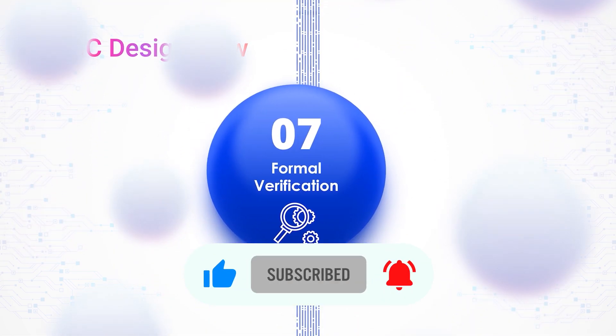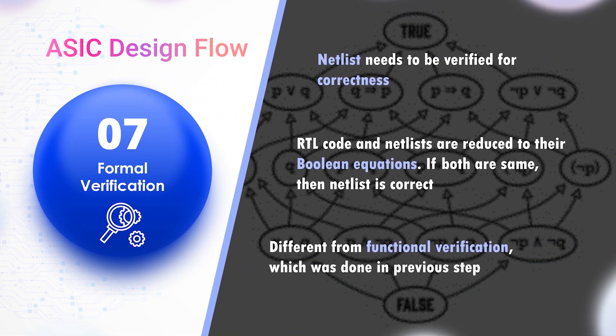Formal Verification: In the previous step, a few more additions were made to the netlist, and it is possible that bugs may have been introduced. Thus the netlist needs to be verified for correctness. In this step, the RTL code and the netlist are reduced to their boolean equations and compared. If both are the same, the netlist is correct. Functional verification is not used here, as it is tiresome and the functionality of the RTL code has already been tested.